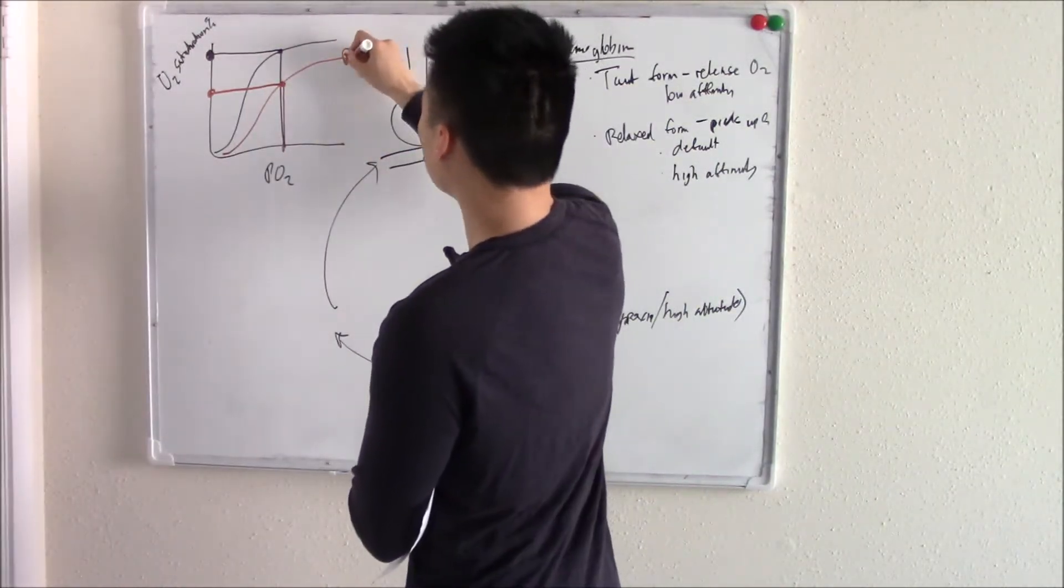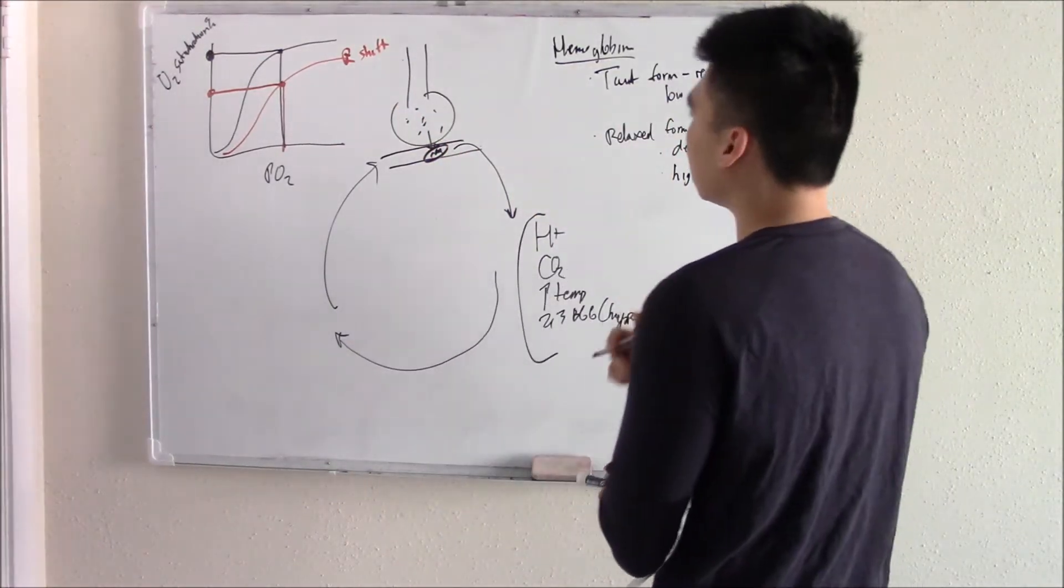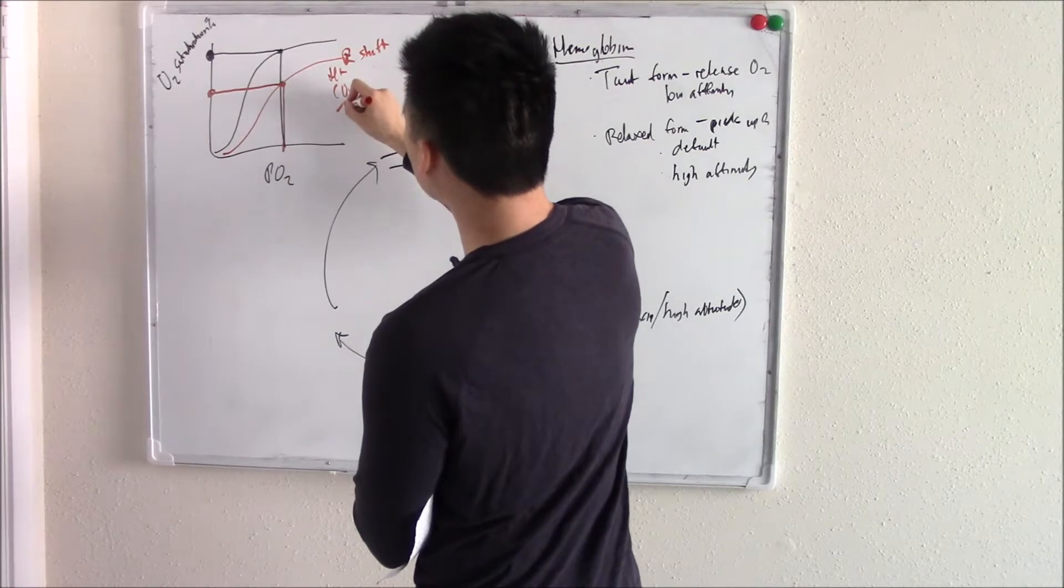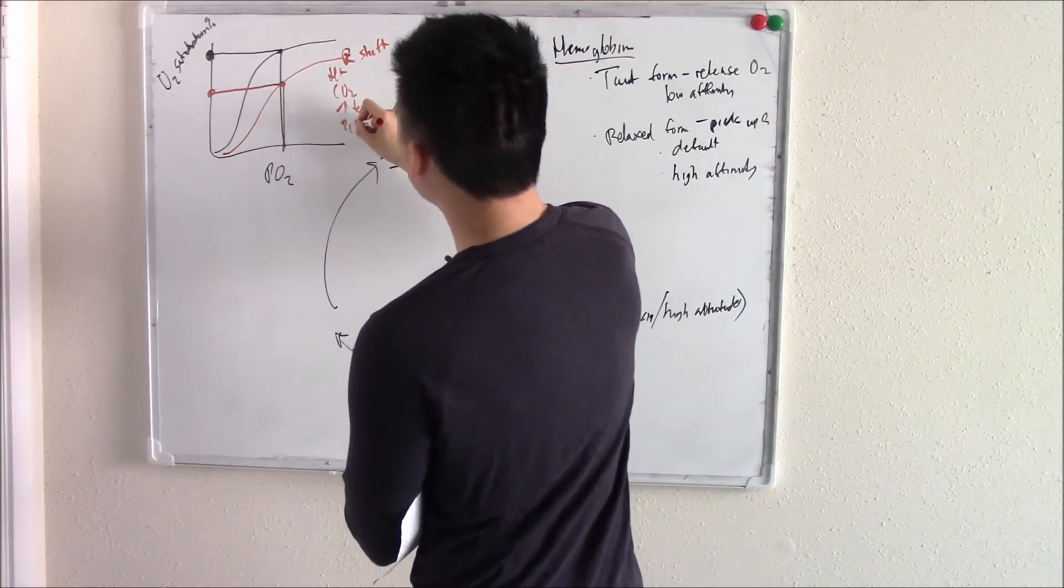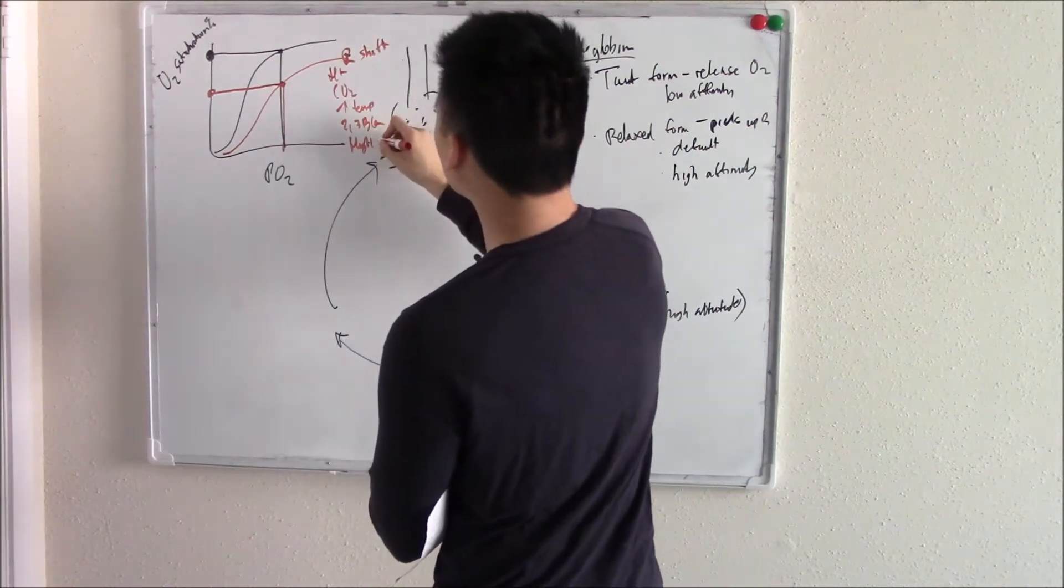So your curve now looks like this. Sometimes we call it right shift. And it's due to all these chemical mediators: H+, CO2, increased temp, 2,3-BPG, high altitude, the whole nine yards.